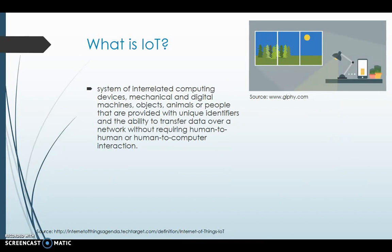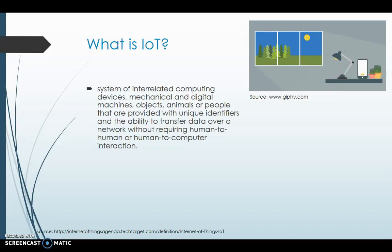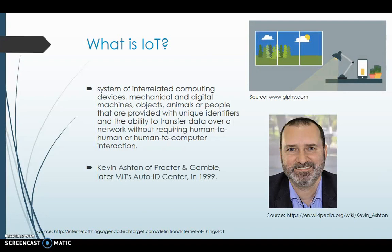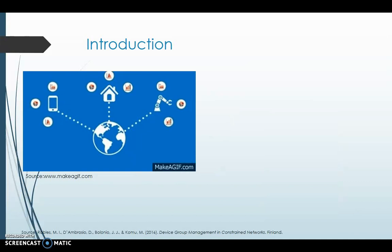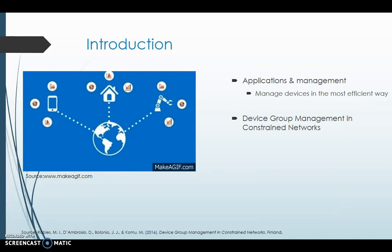IoT is just a network of interconnected devices. You can think of home appliances, smartphones, smart vehicles. It's a concept which was introduced in 1999 by Kevin Ashton. For this presentation we chose the topic Applications and Management, where we focused on the management of devices in an efficient way, specifically on device group management for constrained networks.